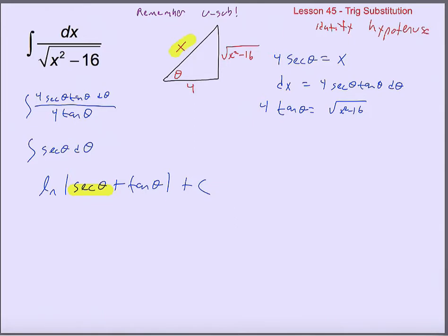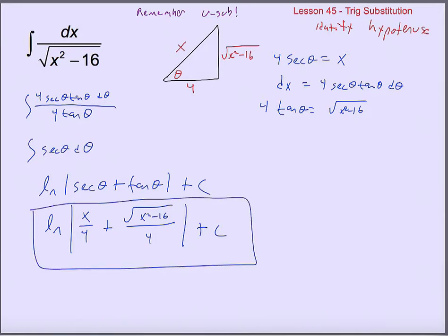Secant is hypotenuse over adjacent, so secant of theta is just x over 4. And the tangent of theta is the opposite over the adjacent, which gives us the square root of x squared minus 16 over 4. So the final answer is the ln of the absolute value of x over 4 plus the square root of x squared minus 16 over 4, plus C.